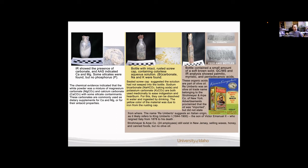Our final artifact from this site is this very tall thin bottle. We weren't able to make out what it said on the sides, the embossing there, but through rubbings we can see that one side says Ray Umberto and the other one says pure amid bottles. This bottle contained a small amount of a soft brown solid and gas chromatography mass spectroscopy and IR analysis showed palmitic, myristic, and pentadecanoic acids in there. So those three acids are all known components of olive oil. Ray Umberto was an olive oil trade name belonging to the Strohmeyer and Arp Company of New York. Advertisements claimed that the oil was imported, which you can see on this historical advertisement on the right-hand side, but it didn't state where. However, the name Ray Umberto suggests an Italian origin, likely referring to King Umberto I, who was the son of Victor Emmanuel II. Strohmeyer and Arp Company, which only has 24 employees to this day, still exists in New Jersey, but they are no longer selling olive oil, but rather waxes, honeys, canned food, and things like that.